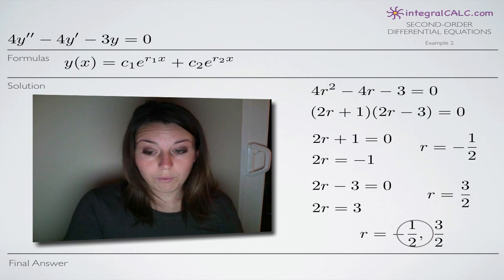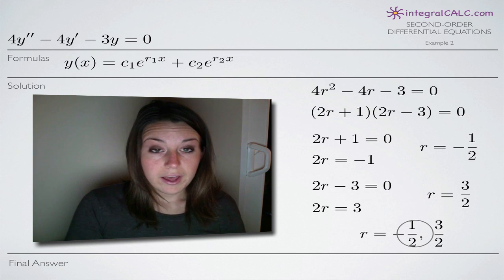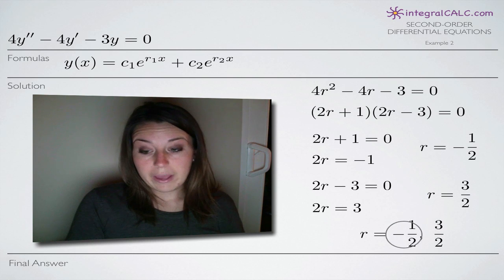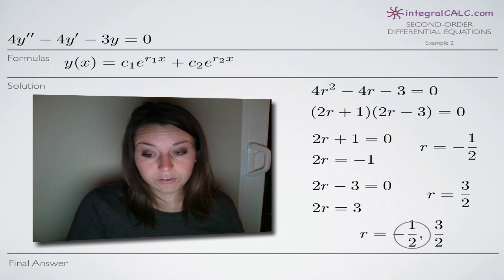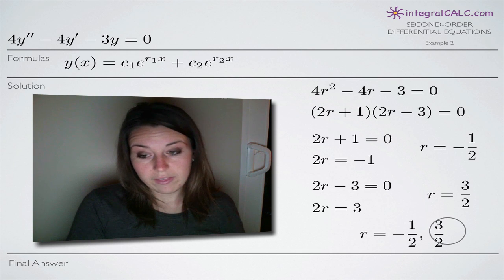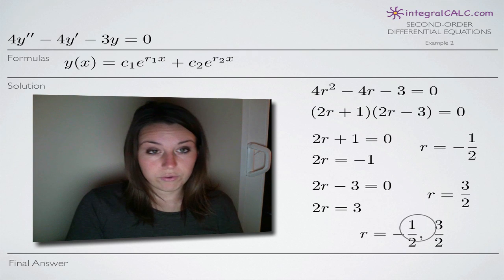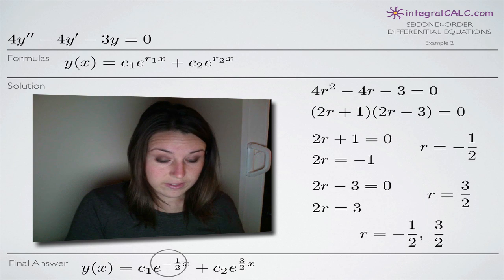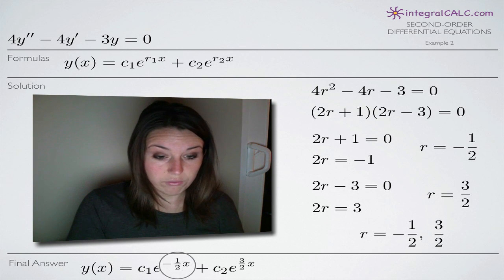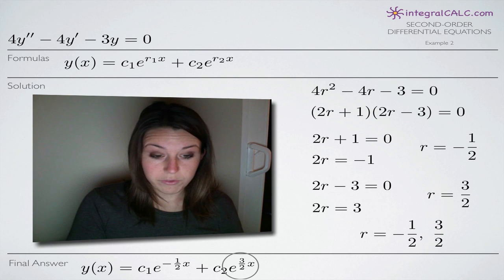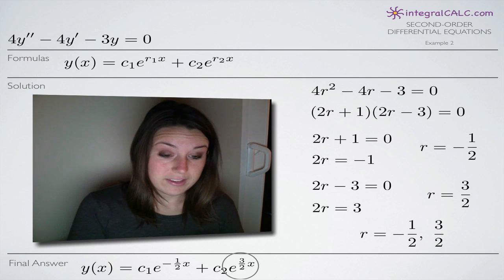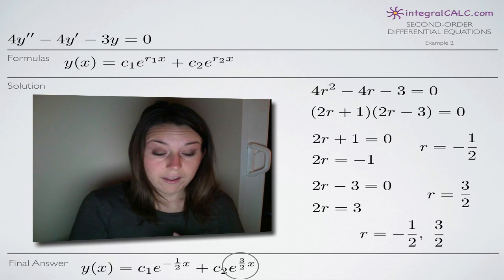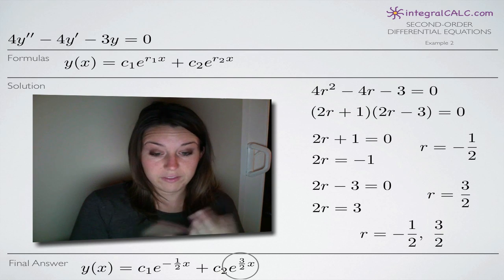These are what we plug in for r sub 1 and r sub 2. It doesn't particularly matter which order, but I plug the lower number in for r sub 1 and the higher number in for r sub 2. So negative one half goes in for r sub 1 and 3 halves goes in for r sub 2. Everything else in the formula stays the same — we leave c sub 1, c sub 2, and the variable x.